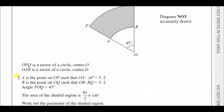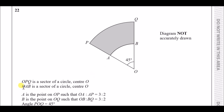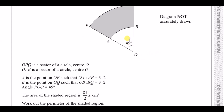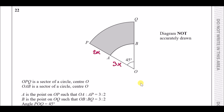OPQ is a large sector with centre O, and OAB is a smaller sector inside it. Point A is on OP such that OA to AP is in the ratio 3:2. So if the small radius is 3x, the remaining part is 2x, making the large radius 5x. Similarly for B — both sectors share the same angle.